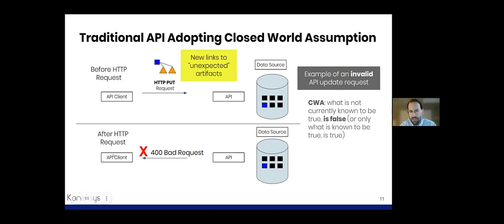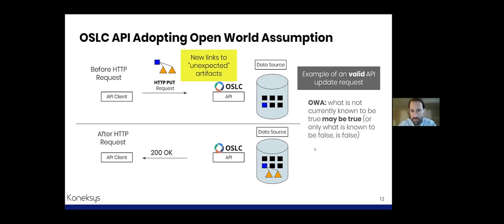That's because typically APIs adopt the closed world assumption — for good reason: they want to prevent chaos and only allow certain operations. But the problem is that this prevents the creation of links to unexpected new link targets. This is why an OSLC API, in contrast to a traditional API, needs to support an open world assumption. So if it sees links to some triangles, it will accept that operation, process it, and possibly save the links in this data source or in a different one.